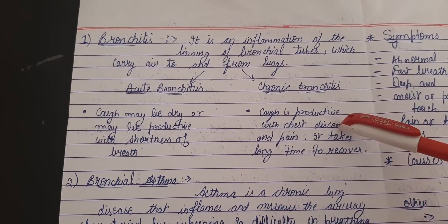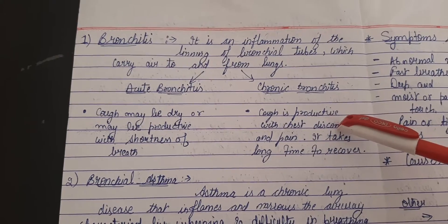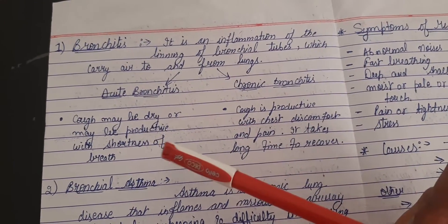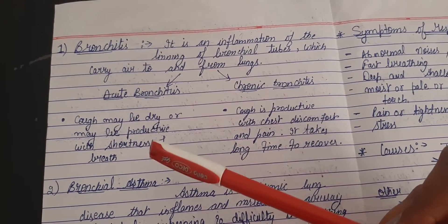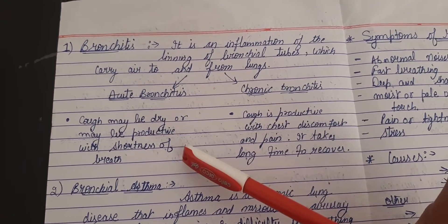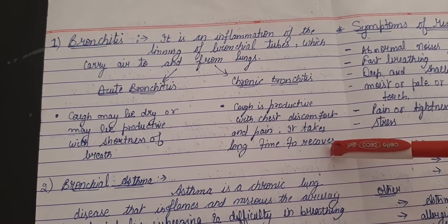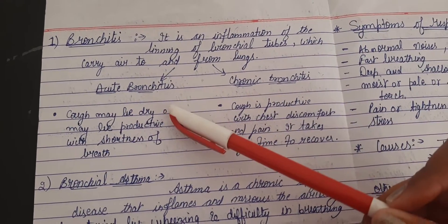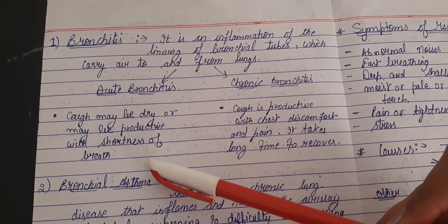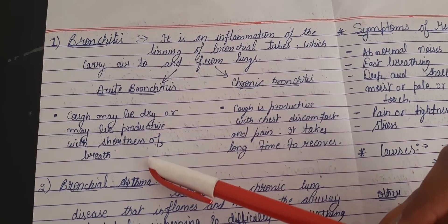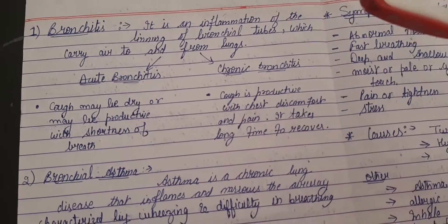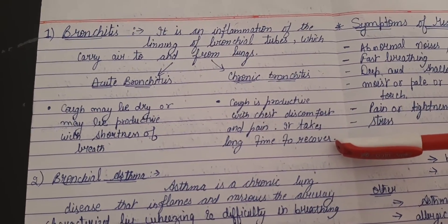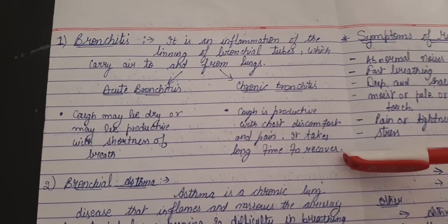Bronchitis is further of two types: acute bronchitis and chronic bronchitis. Acute disease lasts for the shortest time and chronic disease lasts for the long time. In acute bronchitis there is a productive cough and shortness of breath. In chronic bronchitis, the patient also feels chest pain and chest discomfort.